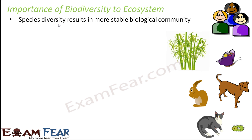Species diversity results in a more stable biological community. Now what do we mean by a more stable biological community? An ecosystem is all about the relationship between different living organisms. Not only living organisms — even the abiotic components, the non-living components, also play a very important role. An ecosystem exists due to the interaction and interdependence between various living and non-living organisms. When you have a variety of species, it gives rise to a more stable community.